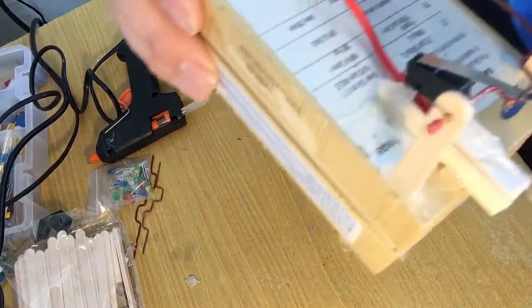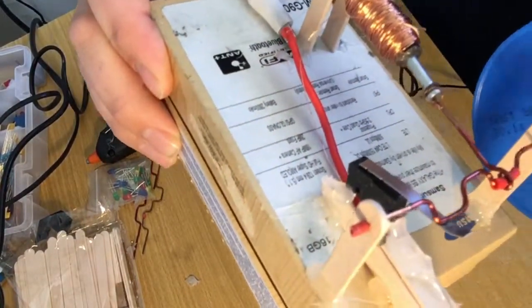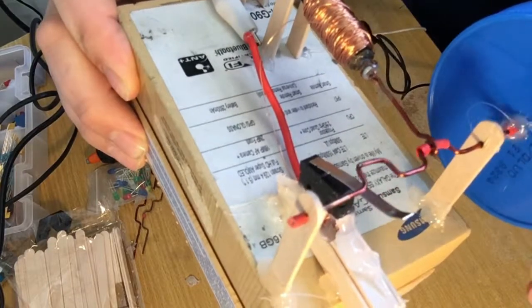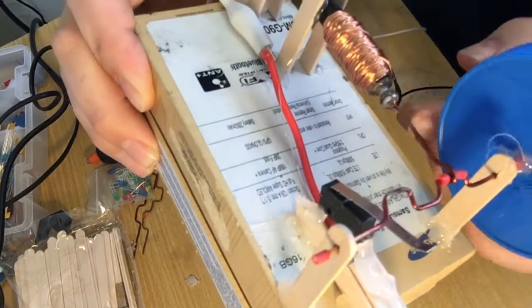You want to get your switch placed so that it's only turning on once the nail is fully extended. So the electromagnet will pull it in, and then once it's near in, it turns off.